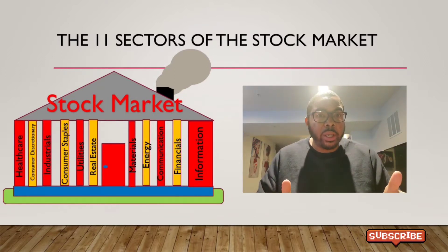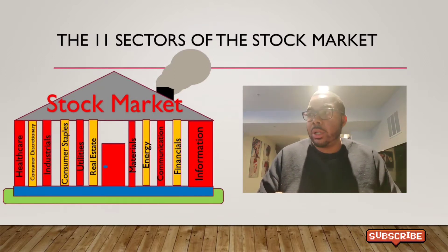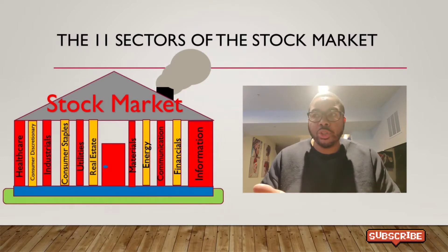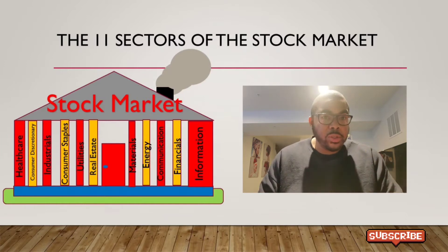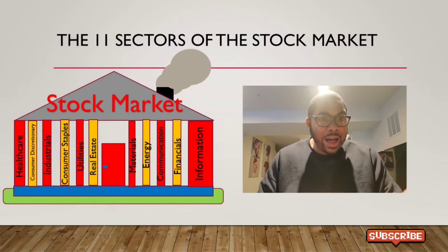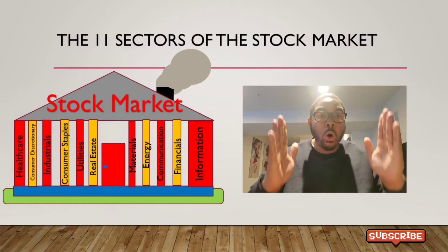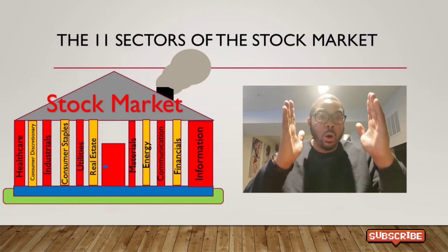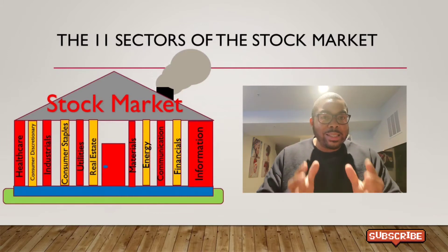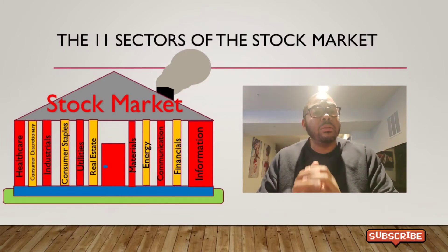This house has 11 columns or 11 sectors that hold it up — which is the stock market. These 11 sectors include health care, consumer discretionary, industrial, consumer staples, utilities, real estate, materials, energy, communication, finance, and information. Those 11 columns hold up the house we call the stock market, and all those sectors sit inside it.